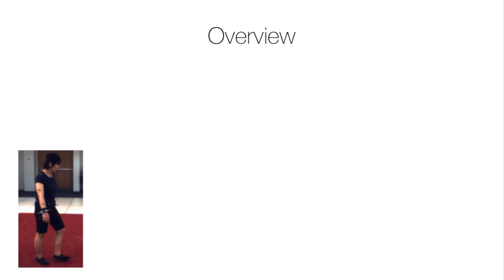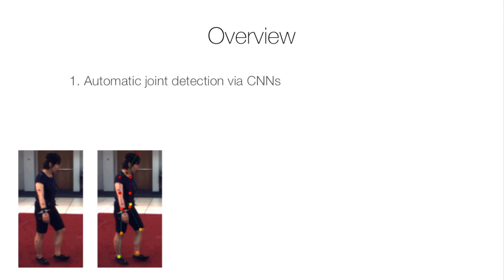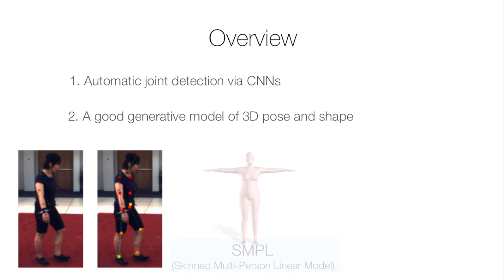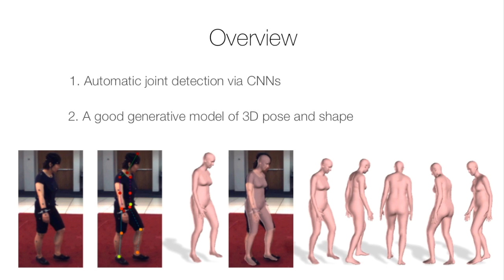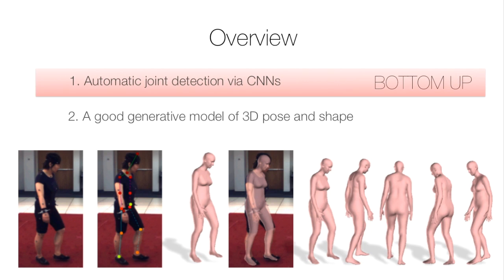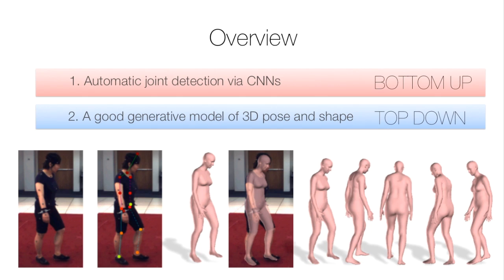We do this in two stages. First, we estimate the locations of 2D joints using state-of-the-art CNNs. Then, we take a generative model of 3D human bodies, called SMPL, and directly optimise its parameters so that the model joints project to the detected 2D joints. This fits within a classical paradigm of bottom-up estimation followed by top-down verification. We can obtain shape from just the joints, because SMPL captures so much information about human body shapes.